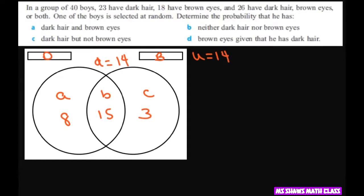So what we want is the probability of dark hair and brown eyes. And so that's going to be, all you have to do is take that dark hair and brown eyes. This is this intersection here. So that just equals 15 divided by 40, which reduces to 3 eighths. All right, let's see the next one.